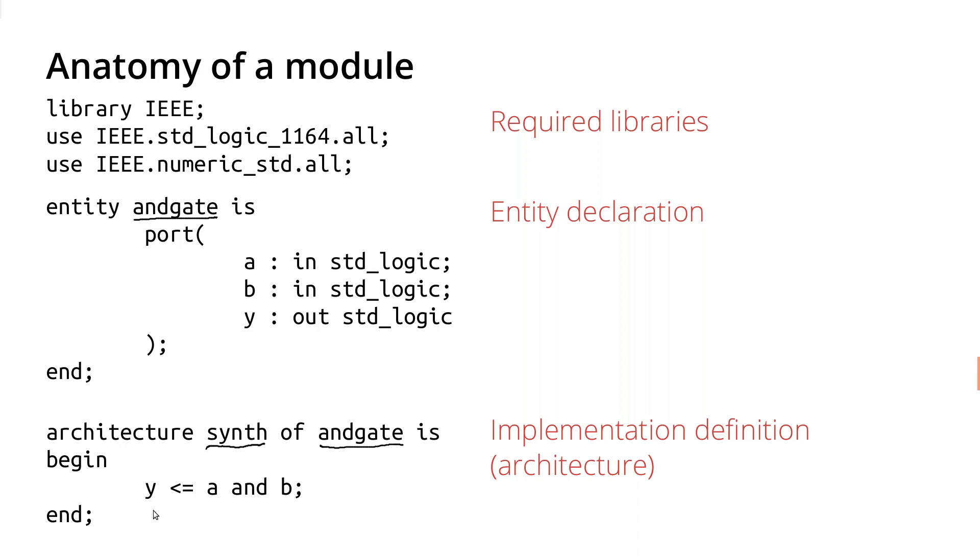And so in this case, we just have Y is assigned the value of A and B. And so with this, we'll just generate. Again, we've got our box here. And we say that Y simply gets the value of A and B. So we just can imagine an AND gate inside here.